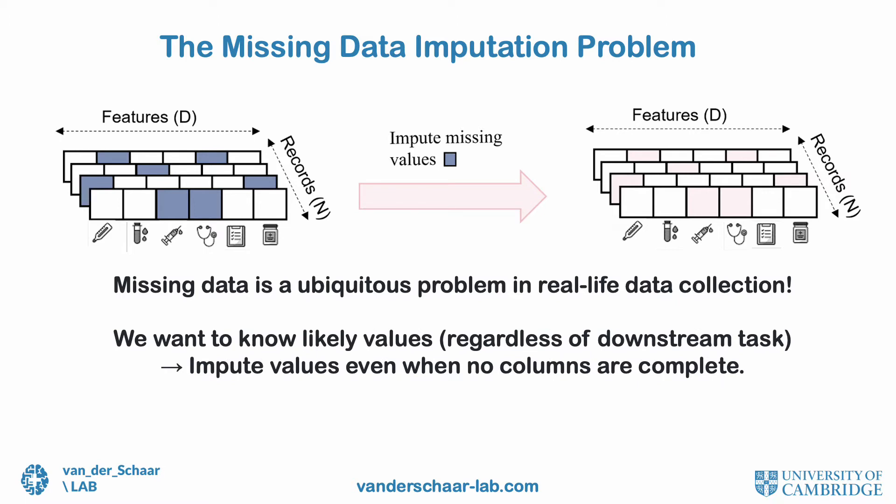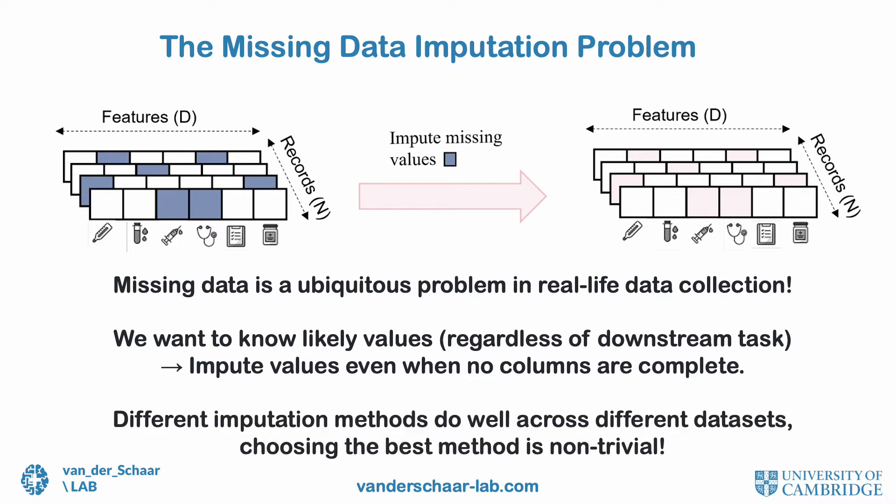Existing methods can be loosely characterized as iterative imputation, or joint modeling using deep generative models. However, different imputation models perform well across different settings, thus choosing the best model and its hyperparameters is a highly non-trivial problem.